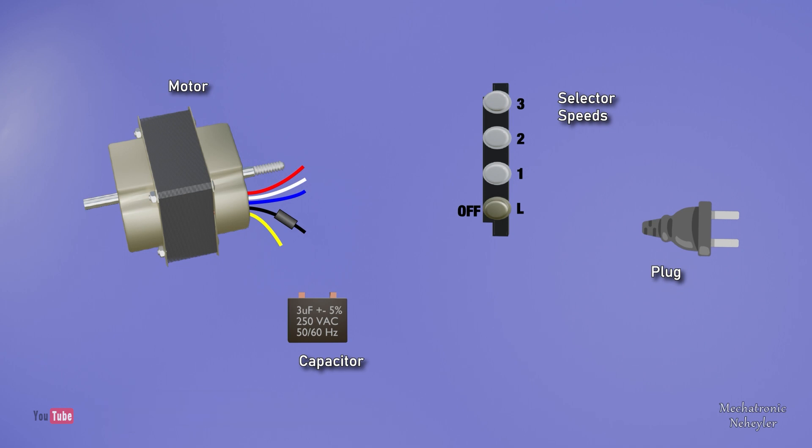In this case, the color of the cables that the motor comes with indicates the following: the blue wire is for the lowest speed, the white wire for medium speed, the red wire for high speed, the black wire for power neutral, and the yellow wire for the capacitor or condenser.